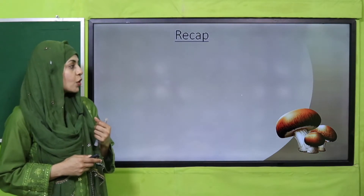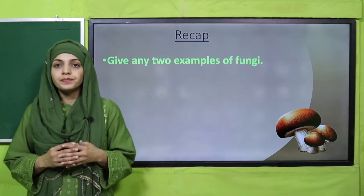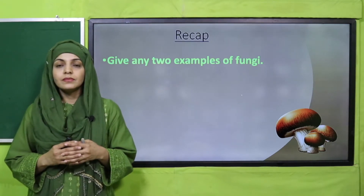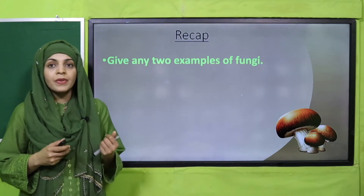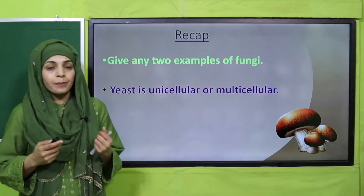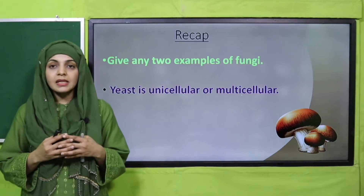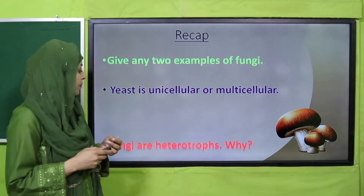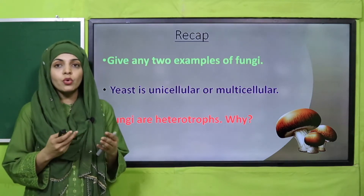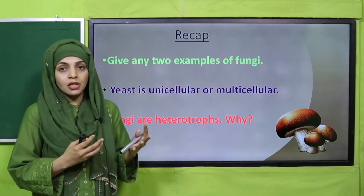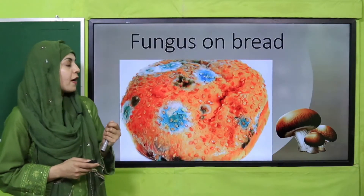Let's quickly look at the recap. Listen to the questions carefully and then answer them. Give any two examples of fungi. Very good — mushrooms are also a fungus. Next: is Penicillium yeast unicellular or multicellular? It is multicellular. Very good. Fungi are heterotrophs because they cannot prepare their own food and they need energy from other sources — that is why they are called heterotrophs.